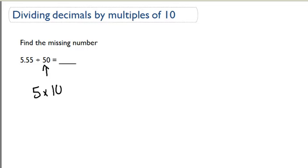Okay, 50 can actually be rewritten as 5 times 10. 50 is a multiple of 10. So what I can do is I can do 5.55, I can divide that by 5 first, and then whenever I get there, I'm going to show you a little shortcut and I'm going to divide that by 10 using a little shortcut.